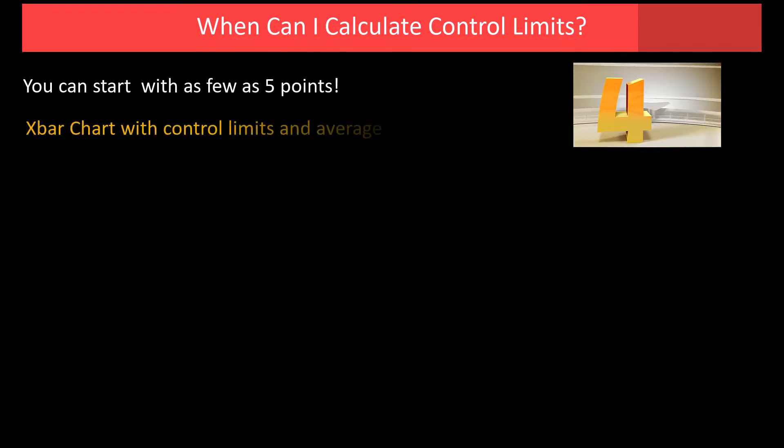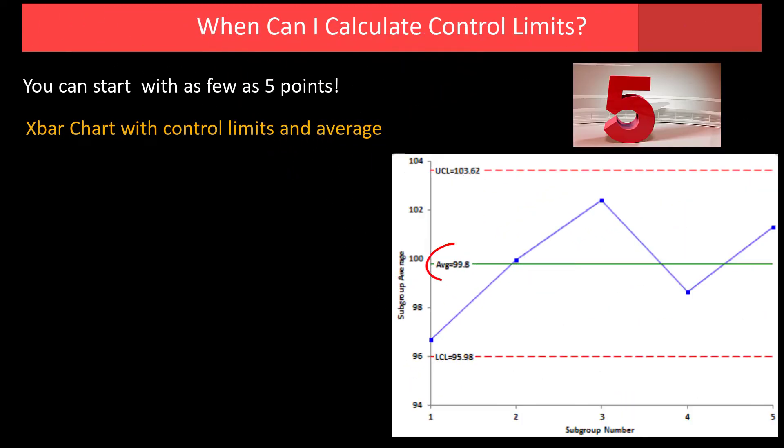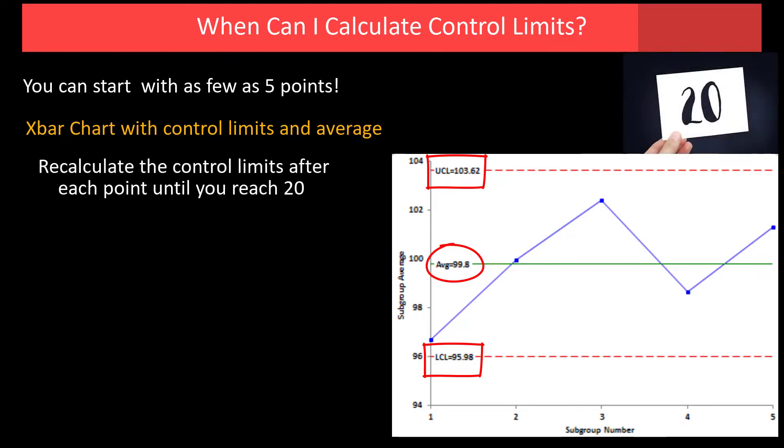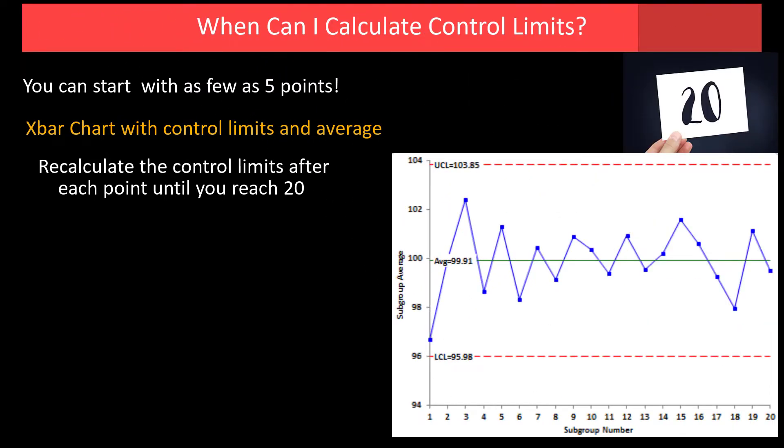You're going to be able to start with control limits with as few as 5 points. So you collect your data. Here's an X bar and R chart with 5 points. We've calculated the control limits and the average. The average was 99.8, upper control limit 103.62, 95.98 for the lower. And then what we do is we calculate control limits after each point until you reach 20.